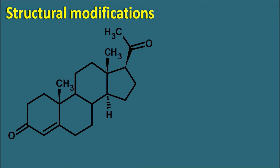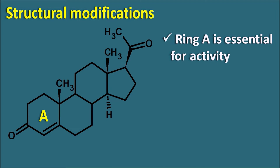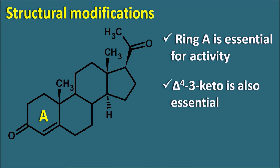Let us look at the structural modifications needed to produce semi-synthetic derivatives of progestogens. Ring A is essential for activity and cannot be removed. The delta-4-3-keto is also essential for activity, although in one structure the ketone group at the third position is removed. Another important feature is the 14-alpha-hydrogen, which is essential but can be modified to beta configuration in a few structures.